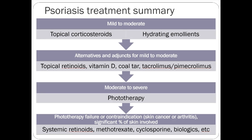To summarize psoriasis treatment: for mild to moderate disease, use topical corticosteroids and hydrating emollients, along with topical retinoids, vitamin D analogs, coal tar, or tacrolimus/pimecrolimus. Patients have a number of different topical options to cycle through. Phototherapy sits in the middle — it has evidence supporting it but carries a skin cancer risk, so the conversation with the patient matters.